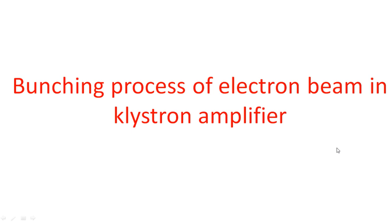Hi everyone. In this video I'm going to explain the bunching process of electron beam in a Klystron amplifier, which is a continuation of the previous mathematical analysis. We are going to derive different types of equations and finally calculate the drift space L1.